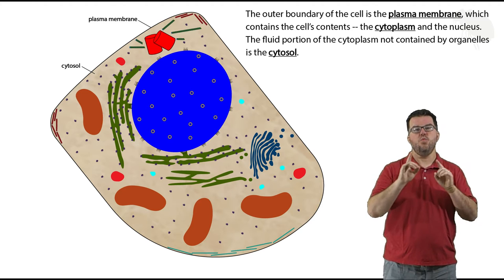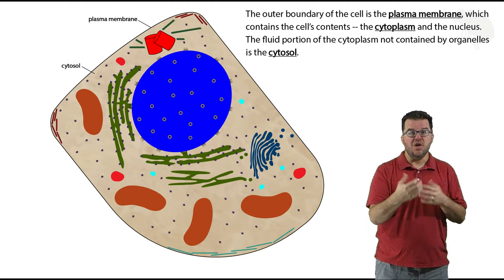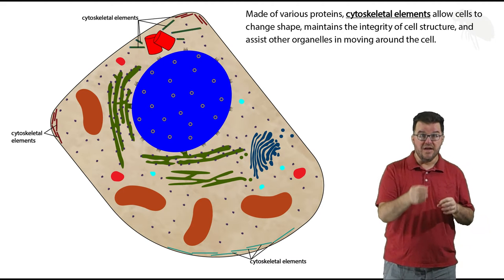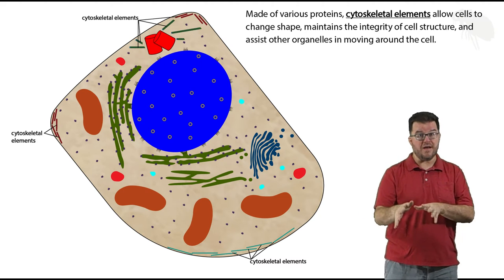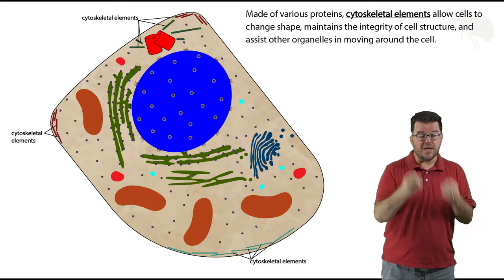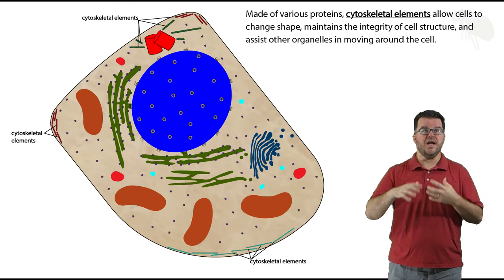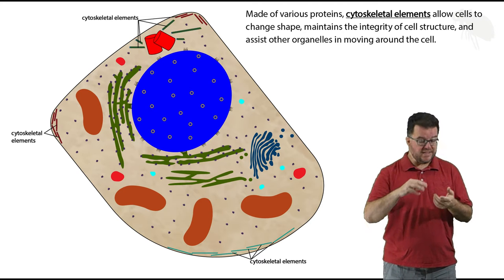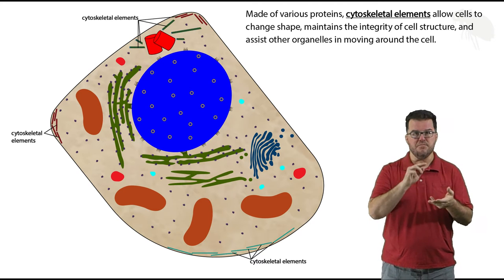While we're on the subject of cytoplasm, contained within it are these protein-based structures called cytoskeletal elements. There are three main types which I'll talk about in other videos, but these cytoskeletal elements each have different properties and different functions that they bring to the cell that relate to the cell's shape and stability and ability to move.